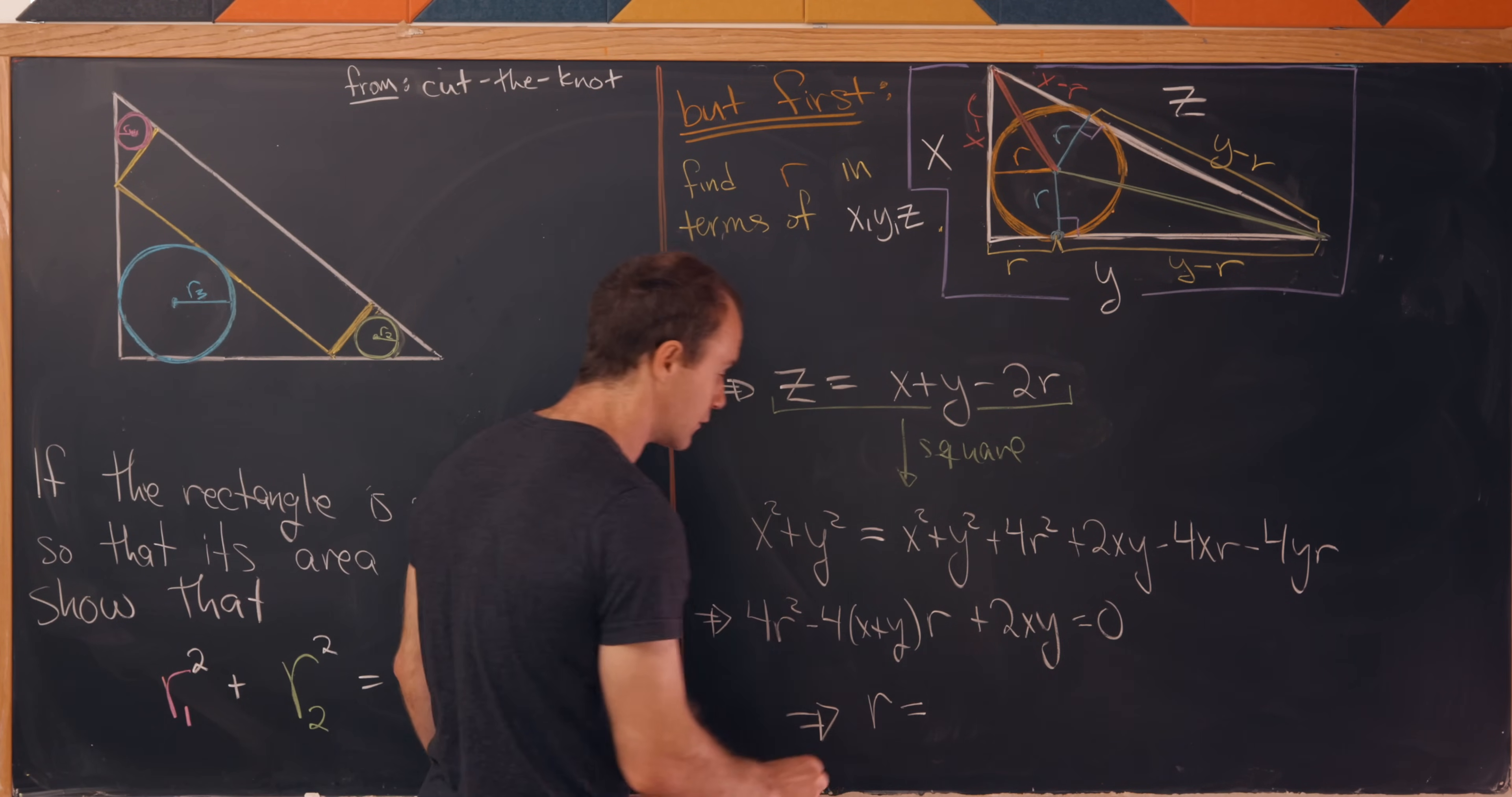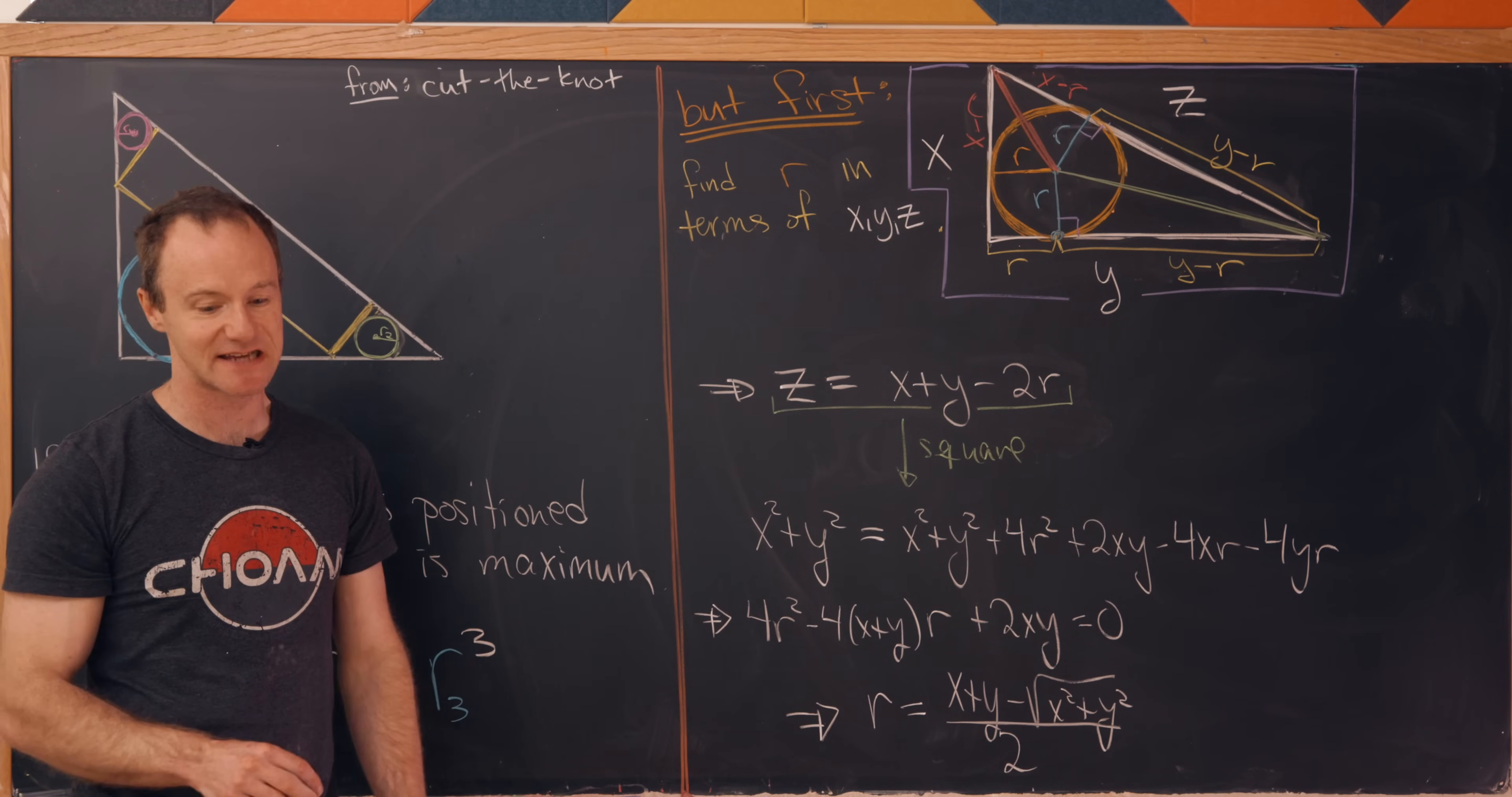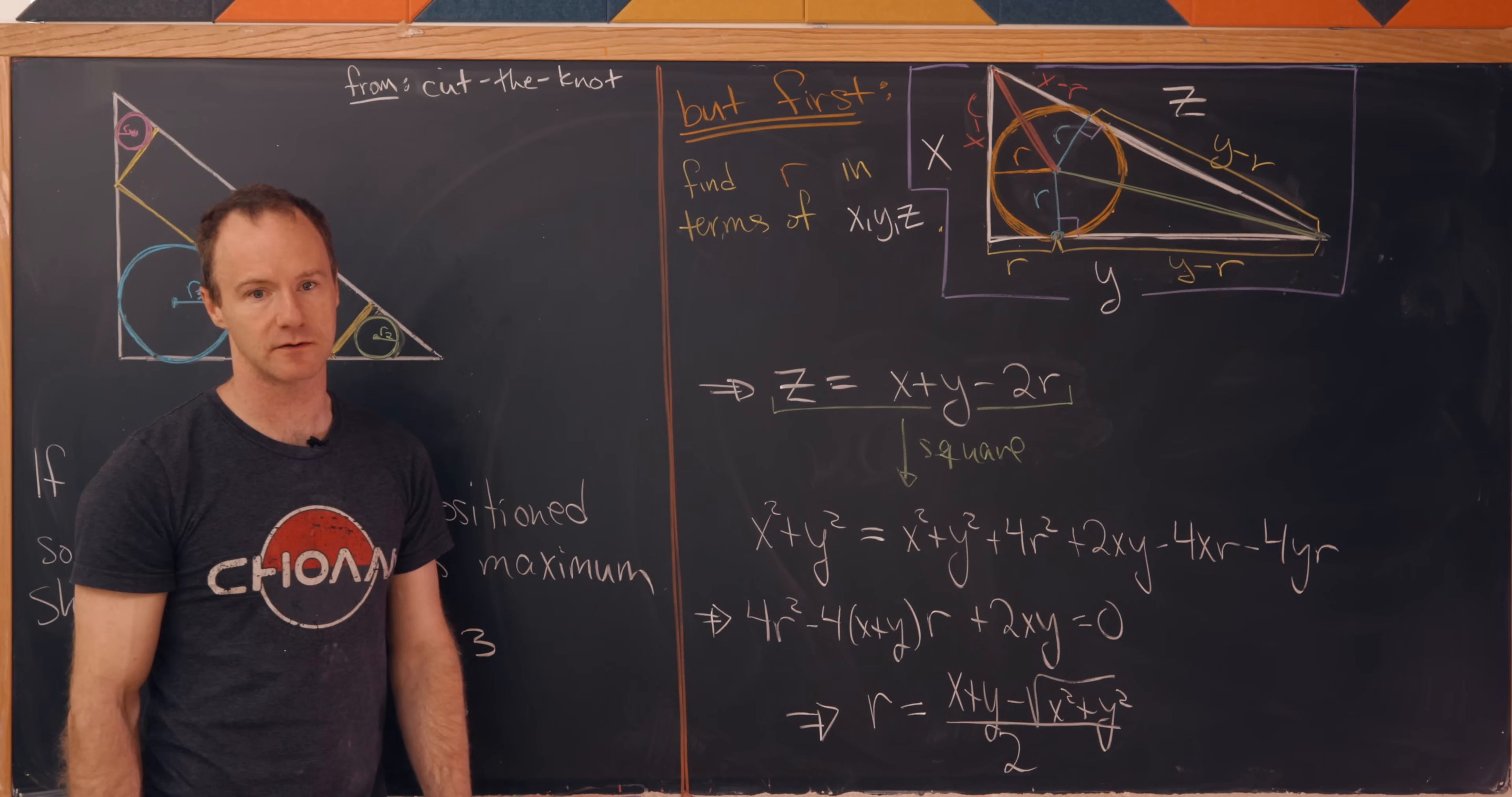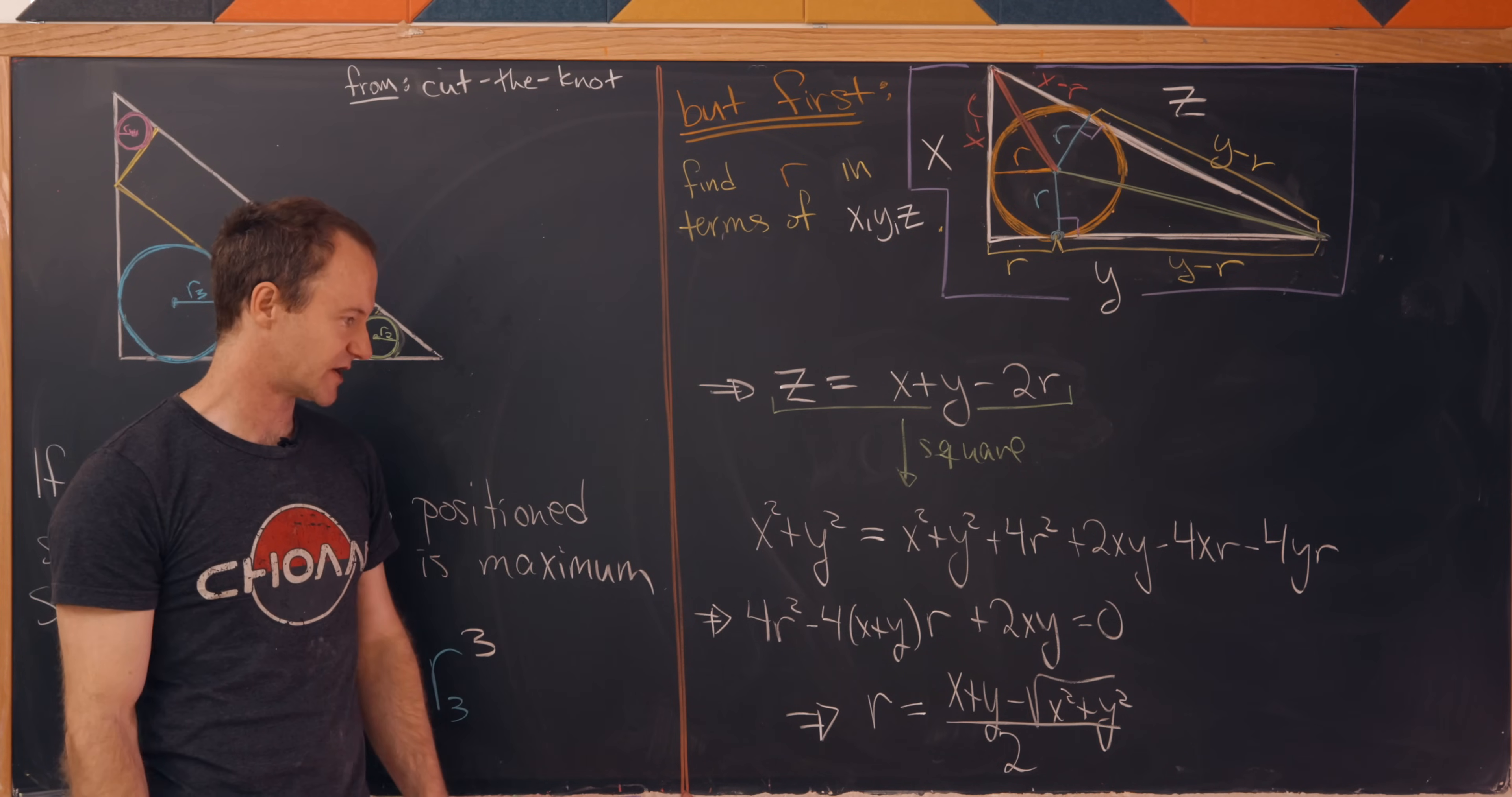We get r equals x plus y minus the square root of x squared plus y squared all over 2. That's exactly what you get from the quadratic formula. We take the negative portion because otherwise you'd have a circle of radius that would not fit inside this triangle.